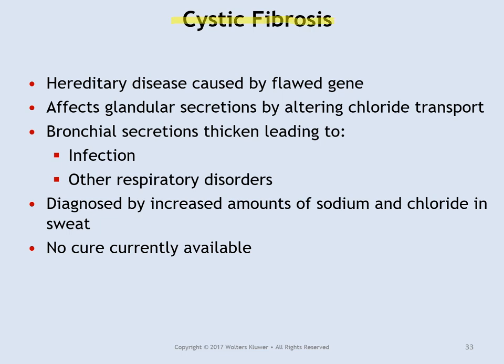Cystic fibrosis is hereditary, caused by a flawed gene affecting how well the chloride component of sodium chloride is transported across cell membranes. When this is interfered with, secretions become very thick — a perfect environment for bacteria to infect the lung tissue. That is the main thing that happens in cystic fibrosis, and from that a whole cascade of other issues follow.